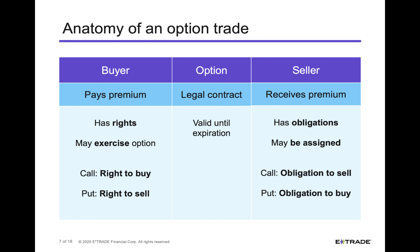A characteristic about all options is that they eventually expire. Some may expire in as short a time as a week; others may last a month, two months, or several months. Then there are some that will last for a couple of years. But regardless, every option will eventually expire. You will find the expiration date before you buy or sell the option — it's not a surprise to you. Once they expire there's no value to that option.